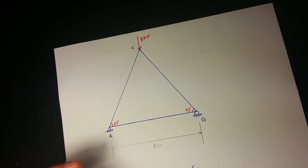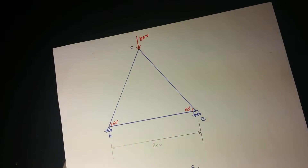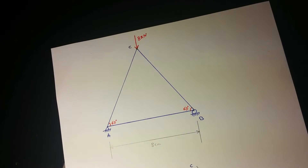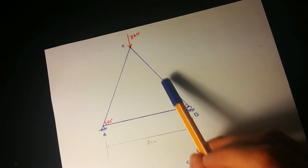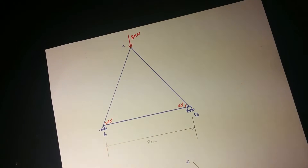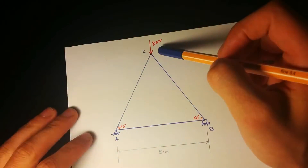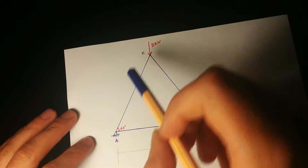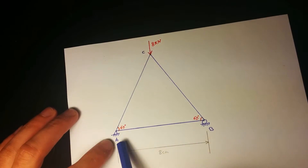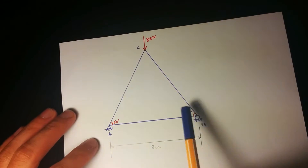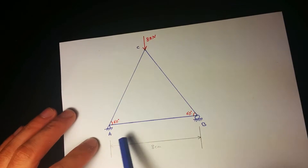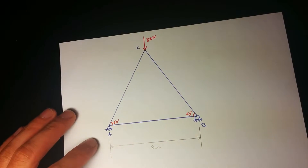Hello and welcome back to another YouTube video. Today we're going to work out truss forces in each of these members. What we have here is 8kN going downwards, we have a pin support at A, we have a roller support at B, this is all 60 degrees and this is 8cm each.